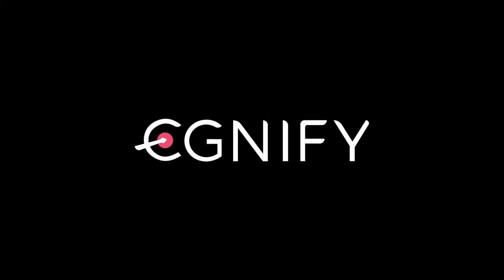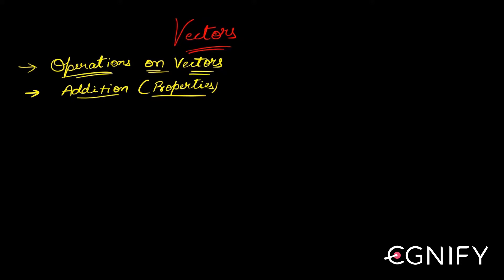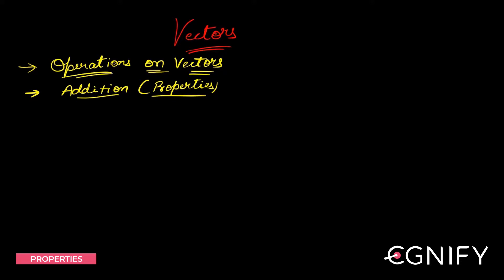Since we've been looking into operations on vectors and we're still in addition, we've seen the three laws which are relevant for addition, and we've seen how all three somehow relate to each other and one can be used to prove the other. Now we will actually look into some properties of addition. After this, we will see the formula — basically, we saw the parallelogram law of vectors where you represent two vectors as sides of a parallelogram and the diagonal gives you the length of the resultant magnitude. We will see how to calculate the length of that diagonal.